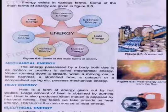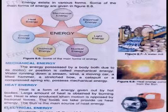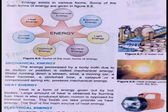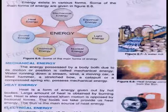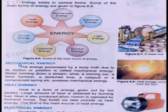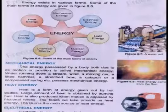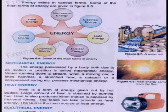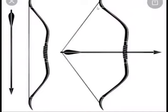This is page number 125 of your textbook. Here the definition of mechanical energy is given: the energy possessed by a body both due to its motion or position is called mechanical energy. Examples include water running down a stream, wind, a moving car, a lifted hammer, a stretched bow, a catapult, and a compressed spring — all possess mechanical energy.